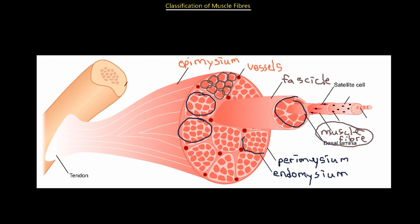The muscle fiber is the most basic unit of muscle tissue — the unit that can perform its function at its smallest capacity. If you go any smaller to the little striations, they would not be able to perform the function fully. However, a muscle fiber on its own is able to perform the function, so it's classified as its most basic unit. In other words, muscle fibers are cells — muscle cells.